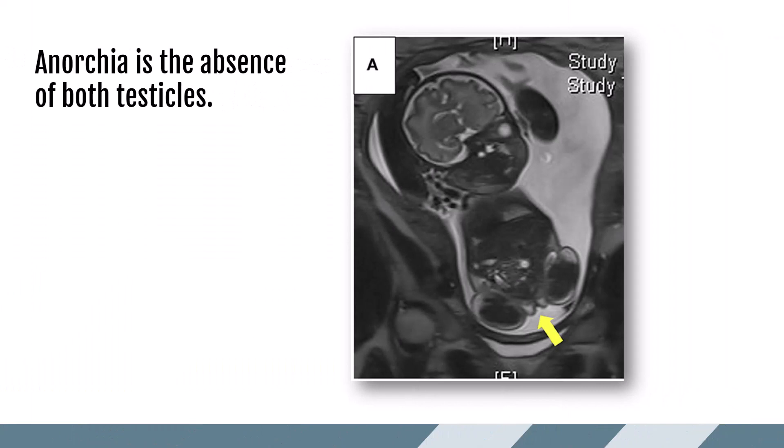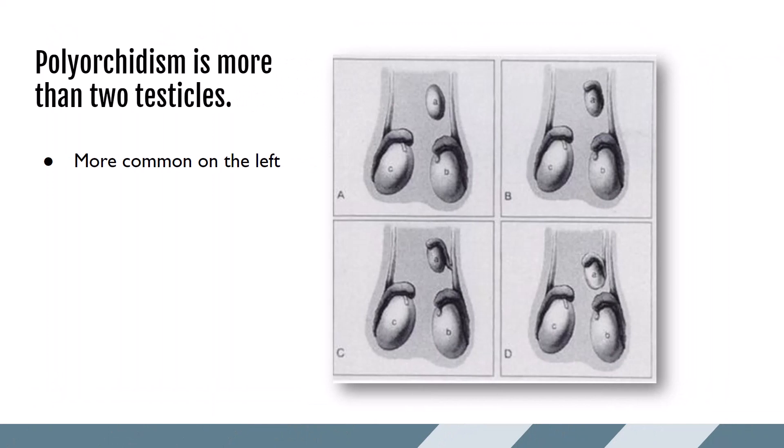Anorchia is the absence of both testicles and can also be seen as a result of interrupted blood flow in utero. Due to low testosterone levels, the penis and scrotal sac tend to be small, and puberty is delayed in these patients. This is an image of a fetus with ambiguous genitalia, with the yellow arrow pointing at a small, empty scrotal sac. After birth, the scrotal sac and penis still appeared smaller than normal. However, in this case the testicles did end up being found in the inguinal canal, so this was not a true case of anorchia, but still has a similar presentation. Lastly, too many testicles is referred to as polyorchidism, also known as supernumerary testicles — a rare condition where more than two testicles may be present in the scrotal sac. The duplicated testicle is typically found on the left and is also at higher risk for malignancy.